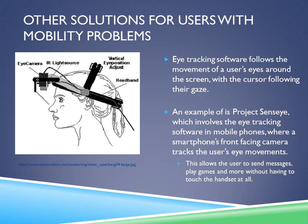An example is Project Sensei, which involves eye tracking software in mobile phones where a smartphone's front-facing camera tracks the user's eye movements. This allows the user to send messages, play games, and more without having to touch the handset at all. As you can see to the left, there is a diagram of how the eye tracking software works along with the eye tracking module they use.